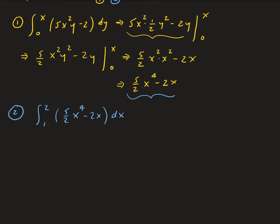Using the power rule here, we're going to get 5 halves x to the 5th over 5 minus 2x squared over 2, evaluated from 1 to 2. Simplifying, this gives us one-half x to the 5th minus x squared, evaluated from 1 to 2.